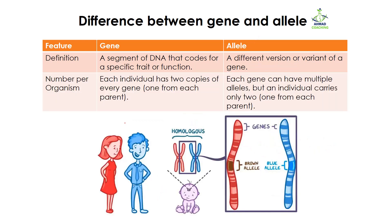If you talk about the number of alleles or genes per organism, each individual has two copies of every gene — one from each parent. As mentioned, homologous chromosomes are present: one chromosome comes from one parent and the other chromosome comes from another parent. That is why there are two copies of a gene present in each individual or offspring.